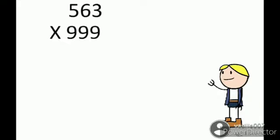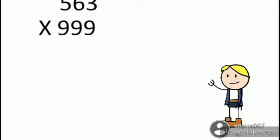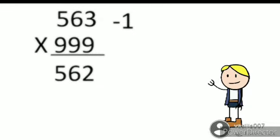We will now multiply 563 multiplied by 999. First, we want to subtract 1 from the multiplying number, that is from 563.